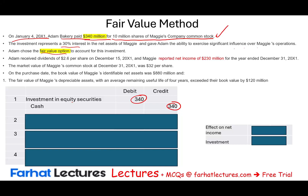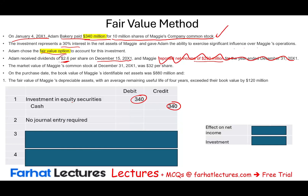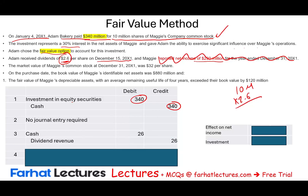Adam received $2.60 per share on December 15th, X1. With 10 million shares, that's a cash dividend of $26 million: debit Cash $26 million, credit Dividend Revenue $26 million. Under the fair value method, we do not care about Maggi's net income of $230 million — we do not adjust our investment based on net income. Net income is ignored; the investment is reported based on fair value only.